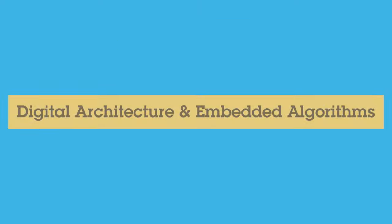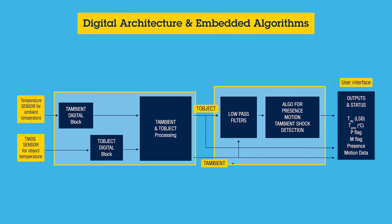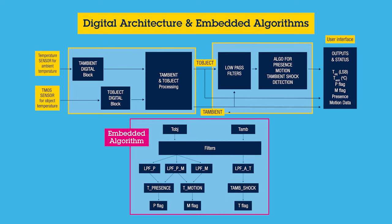Let's take a closer look into the sensor architecture. The sensor reads out the object temperature in its field of view as well as the temperature of the sensor package, called ambient temperature. These sensor signals are processed and fed as input to the presence, motion, and T-ambient shock detection algorithms.